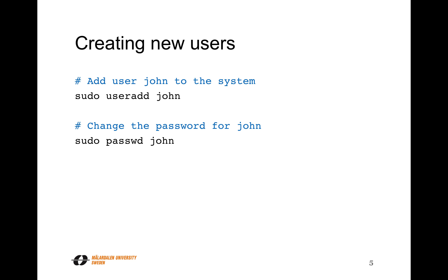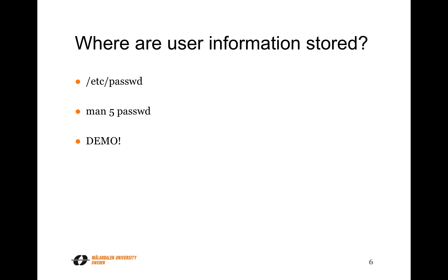User information is stored in the /etc/passwd file. For all users in the system, there is a row in that file that specifies the username, the password location — like if it's stored in the shadow file — and additional information like the full name, room number, and telephone number. Also, when the user initiates a terminal session, the file specifies what terminal application to start — usually bash. You can modify that in the /etc/passwd file.